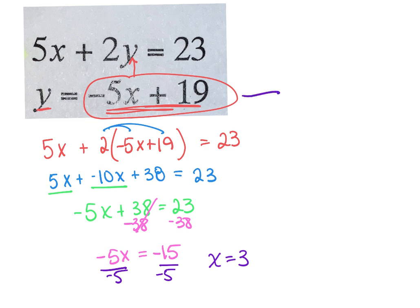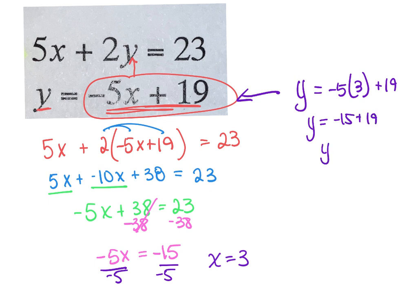I am not done — I need to plug it back in. What is y? I'm going to take this and say, if I know my x, I can solve for my y. Just plug it in. Negative 5 and 3 give me negative 15. Negative 15 and 19 give me positive 4. So my answer here is (3, 4).